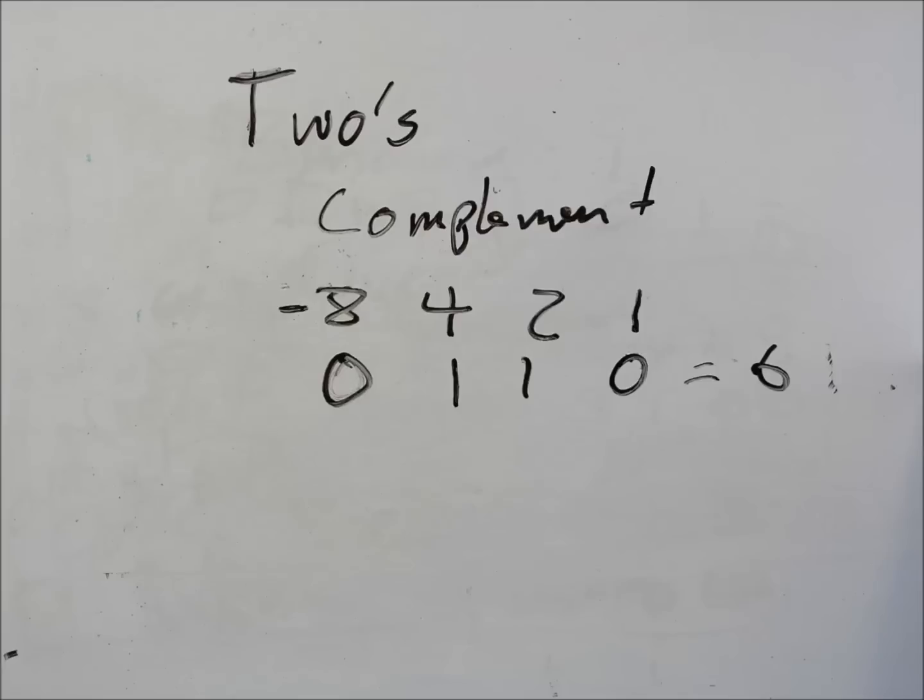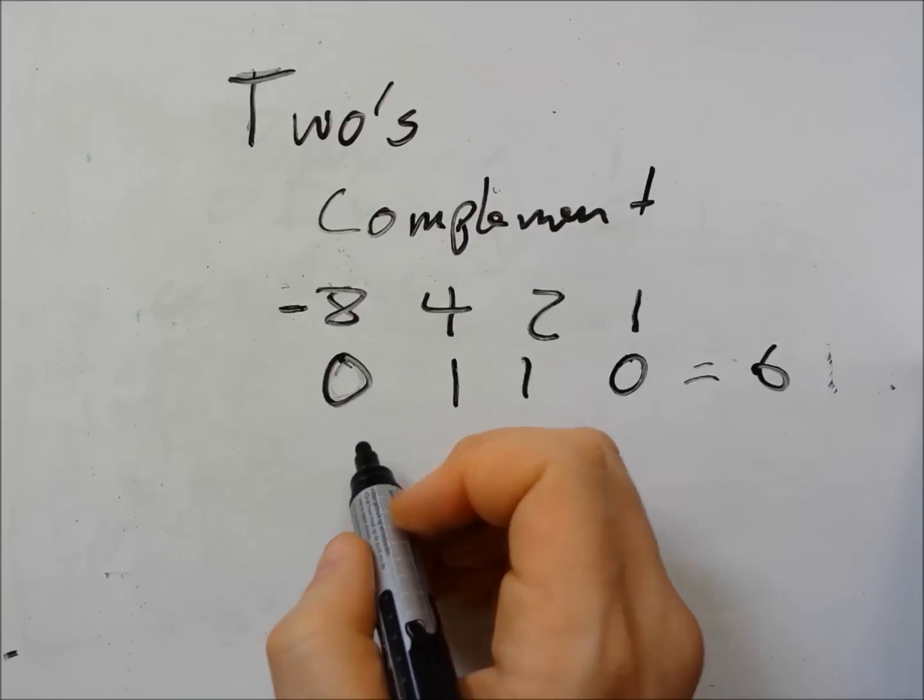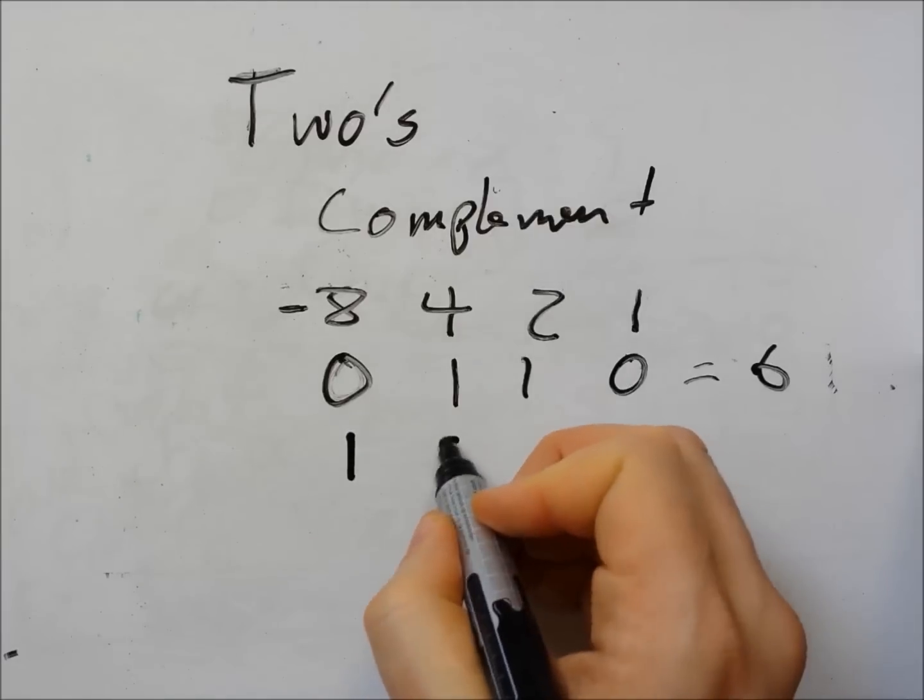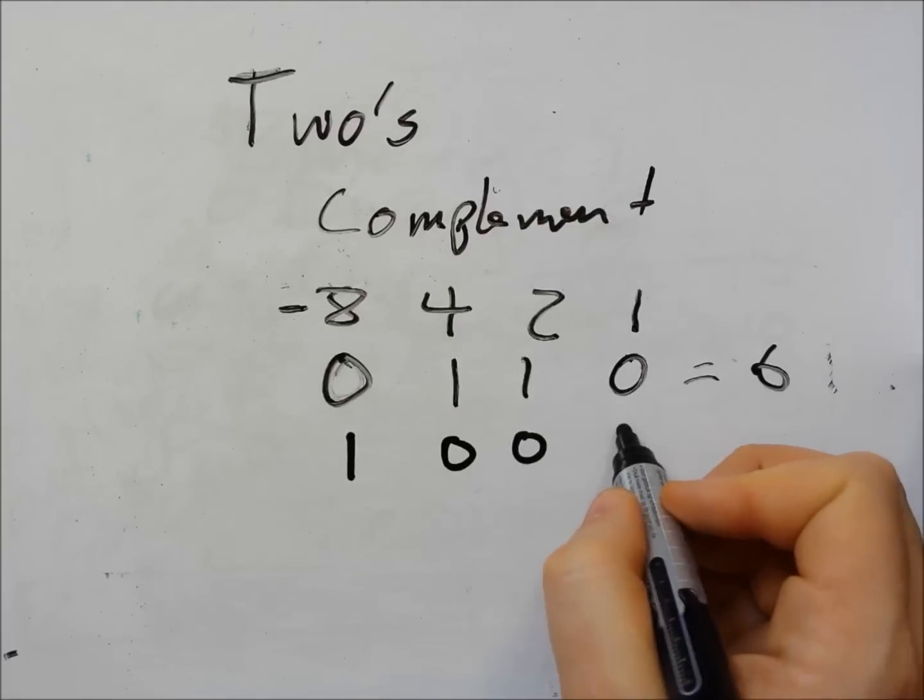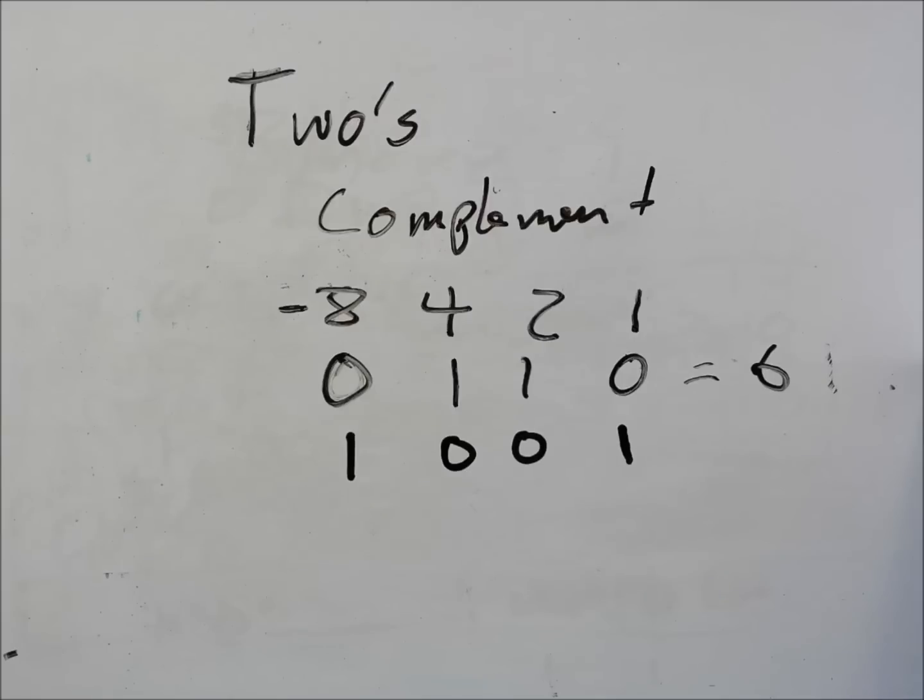Now if I want to put that into the two's complement all I have to do is two simple steps. First of all I flip all the digits like this and then I add one.